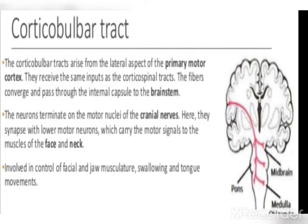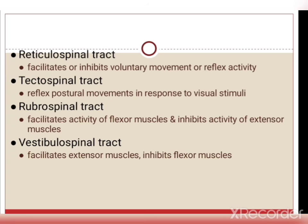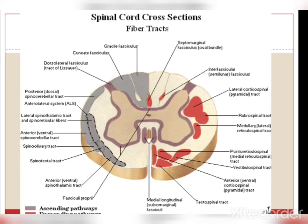The corticobulbar tract arises in the brainstem and is concerned with motor signals to the muscles of the face and neck. Other descending tracts include the reticulospinal tract, tectospinal, rubrospinal and vestibular tracts. These tracts are highlighted in a transverse section diagram of the spinal cord.